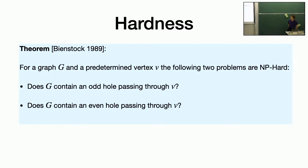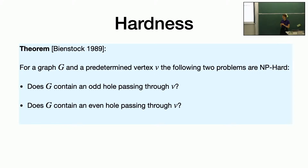It's a little bit surprising that any of these results are polynomial time. In 1989, Bienstock proved that it's NP-hard to determine, given an input graph and a specific vertex, whether there's an odd hole or an even hole passing through that specific vertex — which implies that many induced subgraphs you can draw are NP-hard to detect. It is, however, obviously polynomial time to determine whether a graph contains a hole with a prescribed vertex, because you can just guess its neighbors on the cycle and then use Dijkstra.